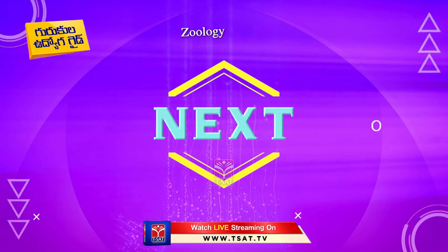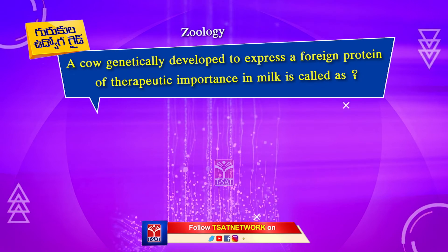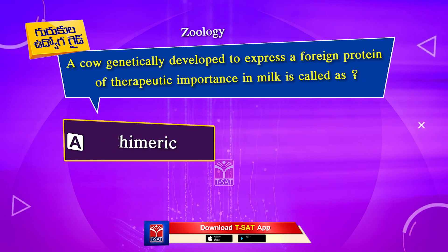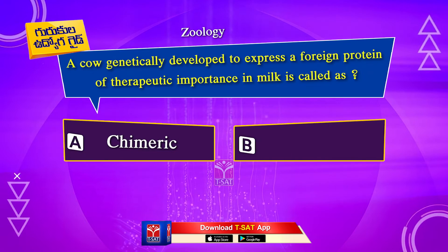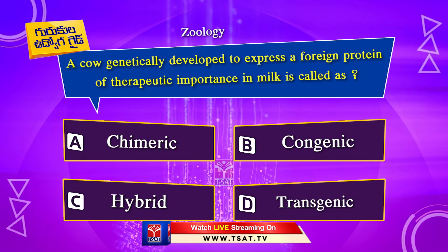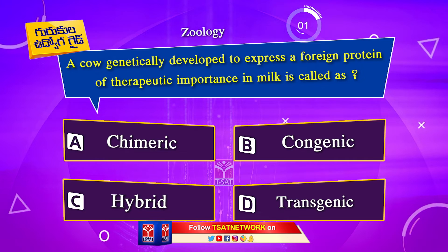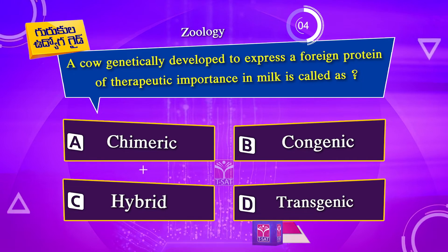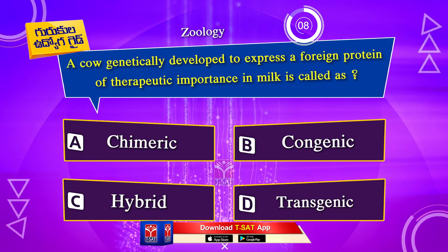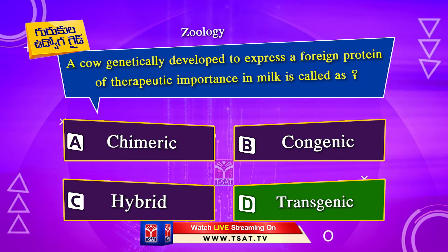Next question. A cow genetically developed to express a foreign protein of therapeutic importance in milk is called: Option A. Chimeric. Option B. Congenic. Option C. Hybrid. Option D. Transgenic. The correct answer is Option D. Transgenic.